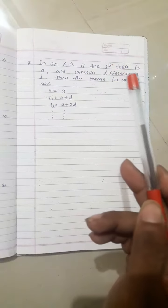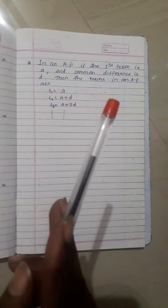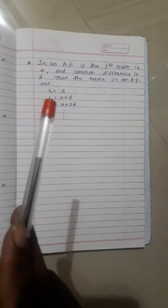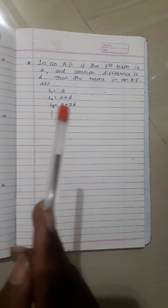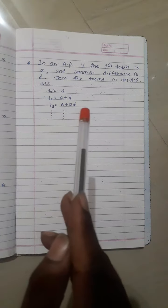In an AP, the first term is a and common difference is d. Then the terms in an AP are: first term is a, second term is a + d, third term is a + 2d, fourth term is a + 3d, and so on.